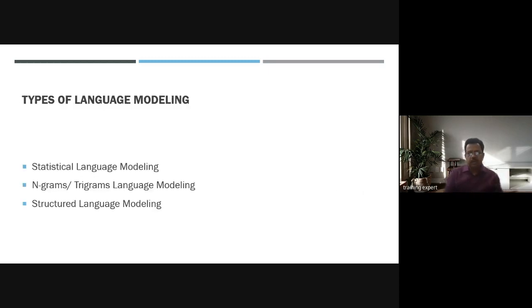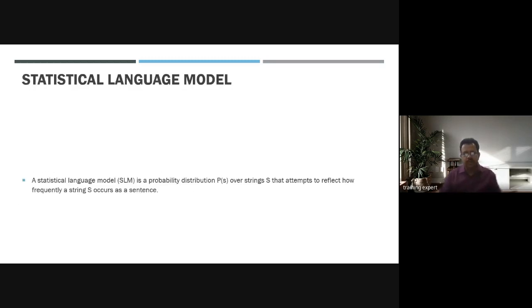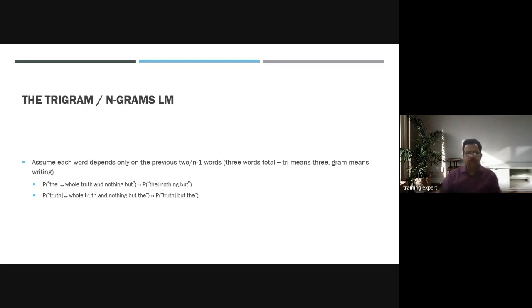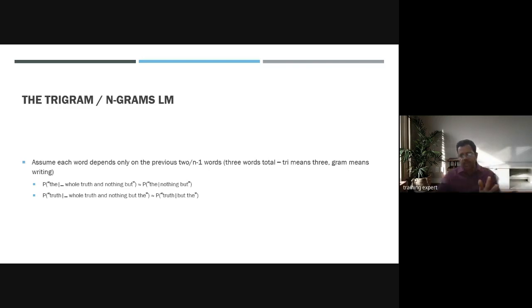The types of language models include the statistical language model, the N-gram model, and the structured language model. The statistical language model is a probability distribution over strings that reflects how frequently a string occurs as a sentence. The N-gram model assumes each word depends only on the previous N-1 words, capturing sequences like 'nothing but' being reliably followed by 'that.'